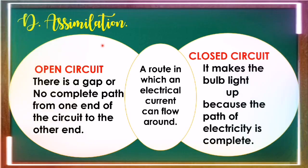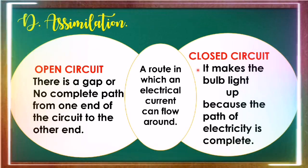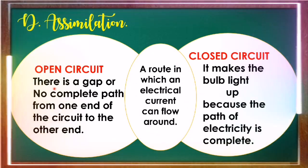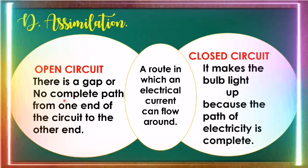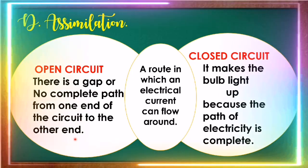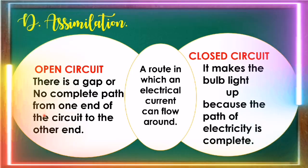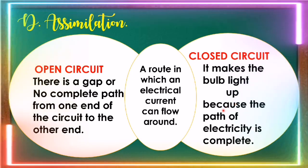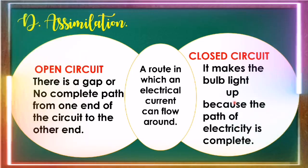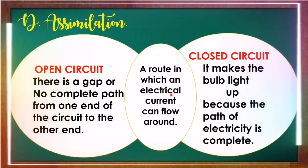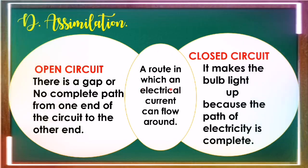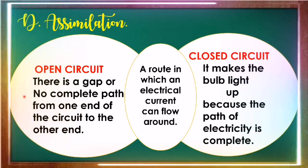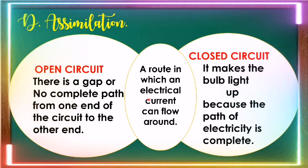Now with our assimilation, let us differentiate the open circuit and closed circuit. And what is their similarity? What is open circuit? There is a gap or no complete path from one end of the circuit to the other end. From the word open. The electricity does not flow. And what is closed circuit? It makes the bulb light up because the path of electricity is complete. It makes the bulb light up. And this is the similarity: a path in which an electrical current can flow around. This is what we call the Venn diagram. This is the Venn diagram about our lesson that is open circuit and closed circuit.